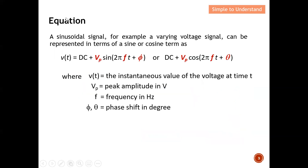Let's start off by discussing the equation first. A sinusoidal signal — for example, a voltage signal — can be represented in terms of a sine or cosine term. On the left-hand side, it describes a signal using the sine term, while on the right it uses the cosine term. On the next video, I'm going to explain the difference between these two. But here, I highlight three important parameters that define how the signal changes.